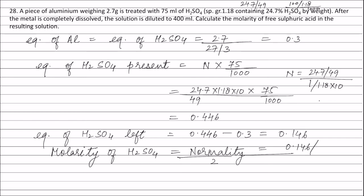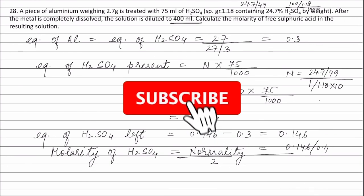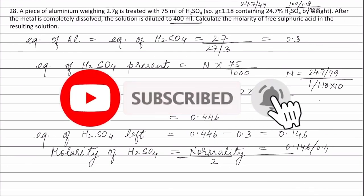According to the question, after the metal is completely dissolved the solution is diluted to 400 ml, so volume of solution = 0.4 litres. Normality of sulphuric acid = 0.146 divided by 0.4. Solving this, the molarity of sulphuric acid = 0.18 M.